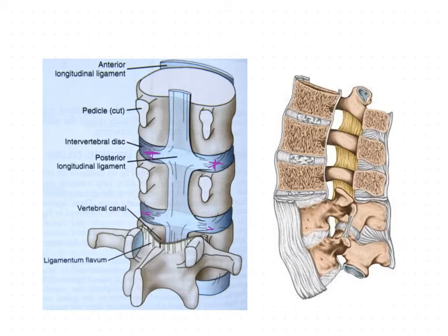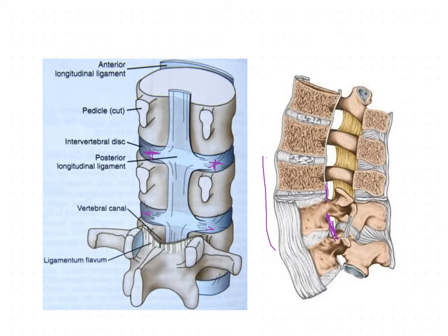As seen in this image of the lumbar region, the posterior longitudinal ligament is very narrow here, providing very little support on the posterior aspect of the vertebral bodies in the lumbar region compared to the cervical and thoracic regions.